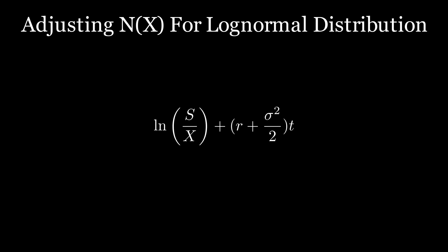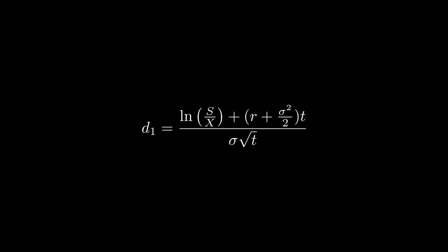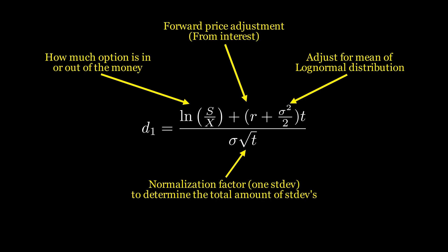To wrap things up, we need to convert this value into a number of standard deviations, because standard deviations help measure how far the strike price is from the mean in a log-normal distribution. Over any time period T, one standard deviation is equal to sigma times the square root of T. The square root of time comes into play because volatility increases with time, but not in a straight line — price changes spread out more slowly as time passes. By dividing the difference between the stock price and the exercise price by this value, we get D1.